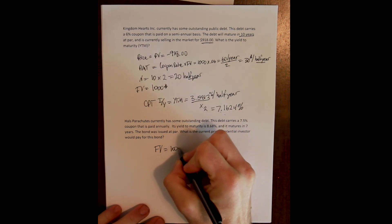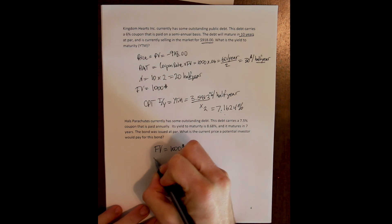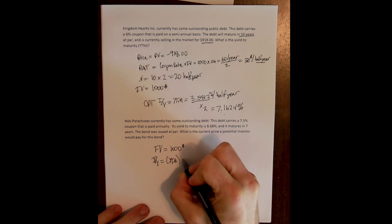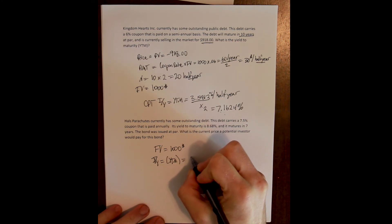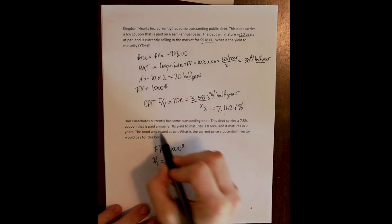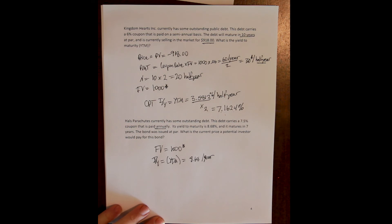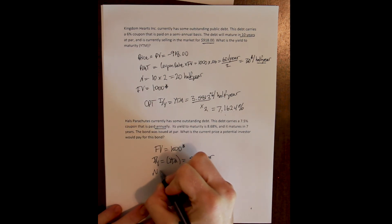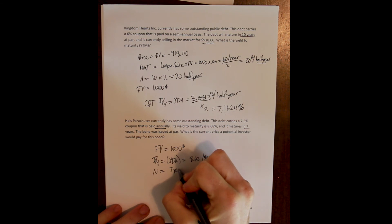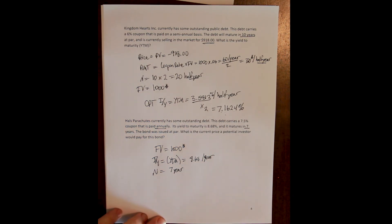Face value, future value is always $1,000. I/Y is our yield to maturity, the required return or the market rate. And that is going to be 8.68% per year. And we have an annual bond. We have paid annually. So we've got annual compounding, so we can leave it there. N is our remaining maturity. And this bond matures in 7 years.